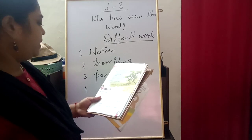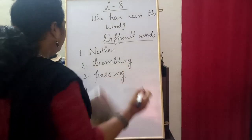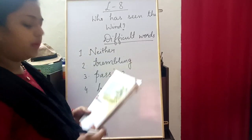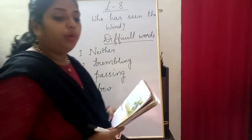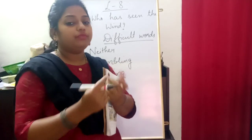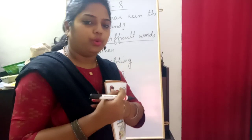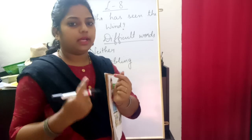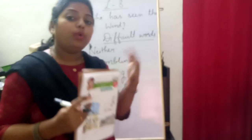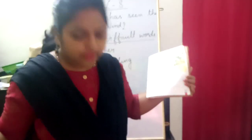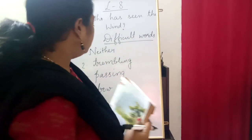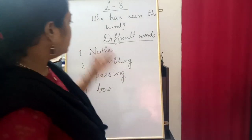Fourth word is 'bow.' Now bow has two meanings: one bow is the one we use with an arrow to hit something, and this bow means bending over — like when we do like this, this is bowing. So these are the four difficult words which you need to copy down in your copy.